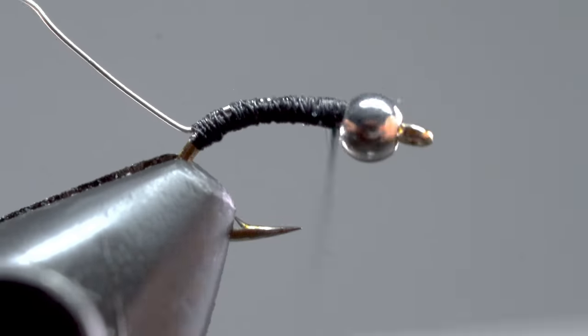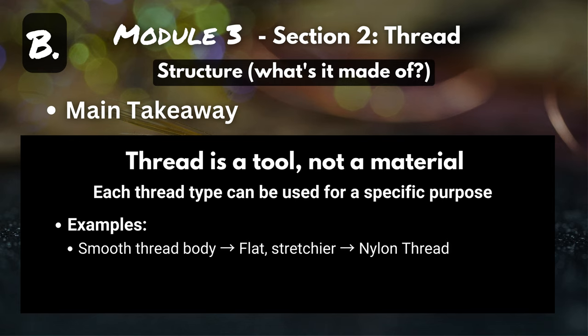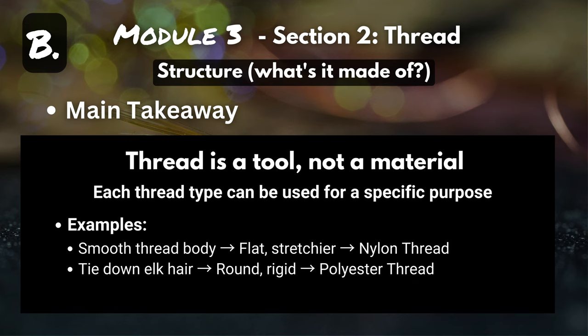As an example, let's say I'm tying up a zebra midge and I want a smooth, even thread body — I'm probably going to want a flatter, stretchier thread, so I'll opt for nylon. Or let's say I need to tie down some elk hair on an elk hair caddis — that requires cranking down on the elk hair, so I want a more rigid thread that won't slide off. For that, I might opt for polyester thread.